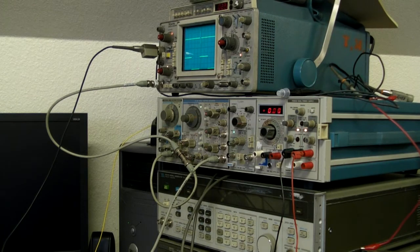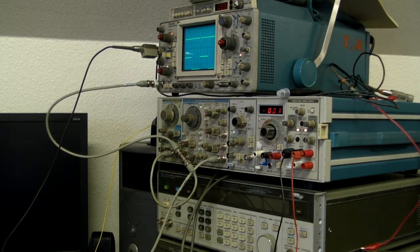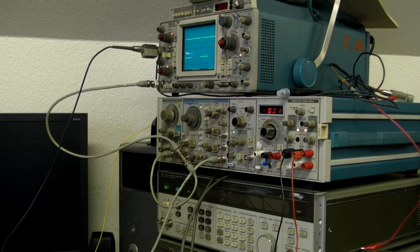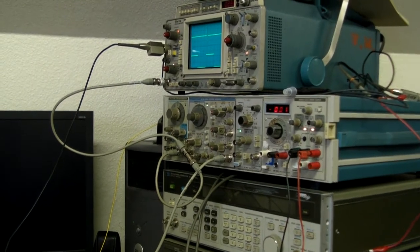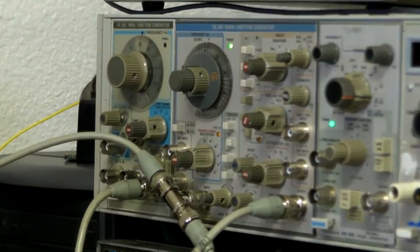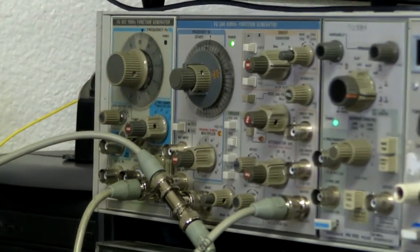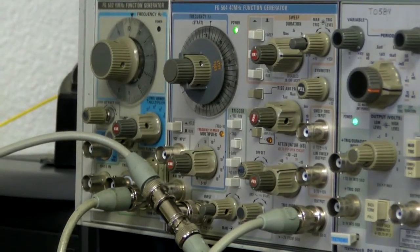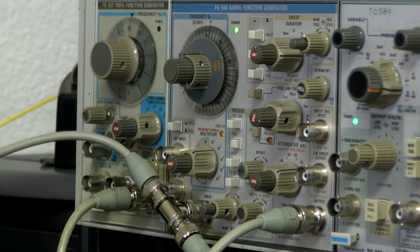It's a nice, full-featured, no computer controlled analog function generator. It sweeps. It does AM modulation. It does FM modulation. It does phase lock. The 502 is a straightforward sine triangle and square wave generator that goes from a fraction of a hertz to 11 megahertz.